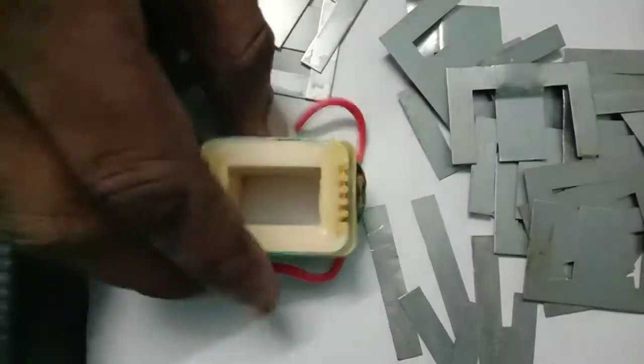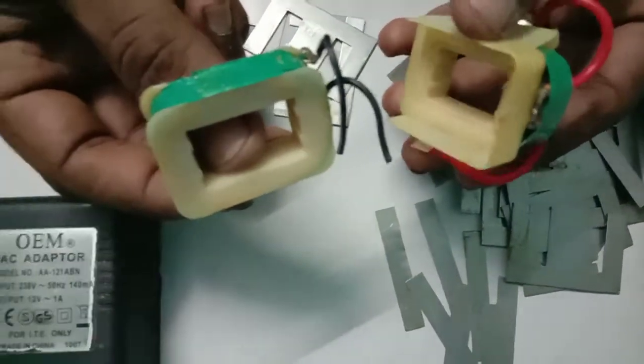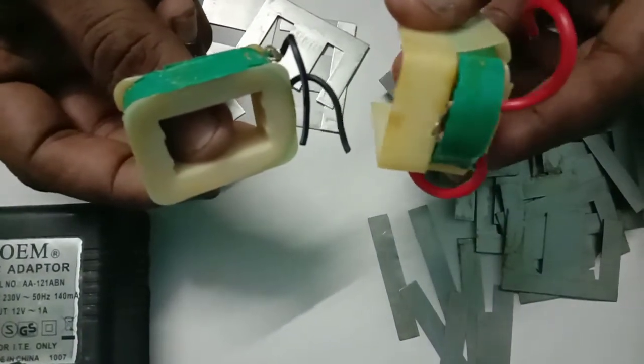So this is a winding. You see this winding. I am segregating this winding. So this black wire denotes it is a secondary winding. This red wire denotes it is a primary winding.